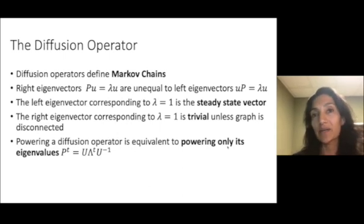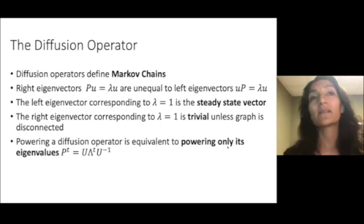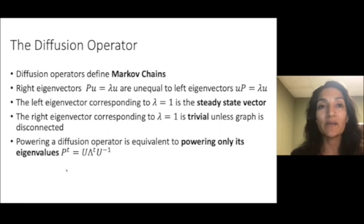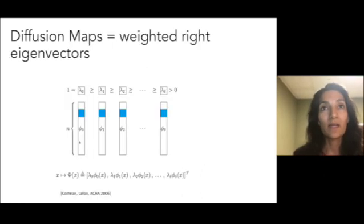And powering a diffusion operator is equivalent to only powering the eigenvalues in this eigendecomposition. The diffusion map construction comes from weighted right eigenvectors of the diffusion operator.